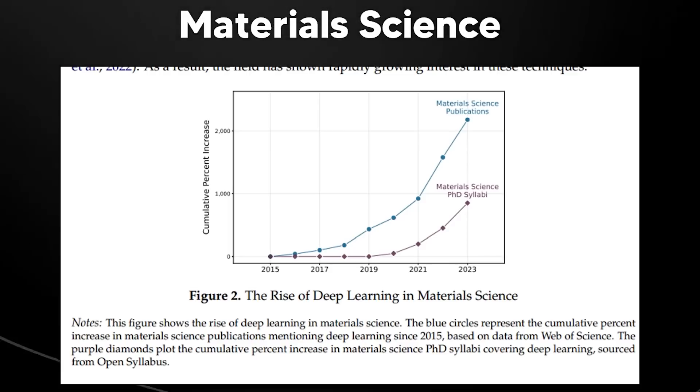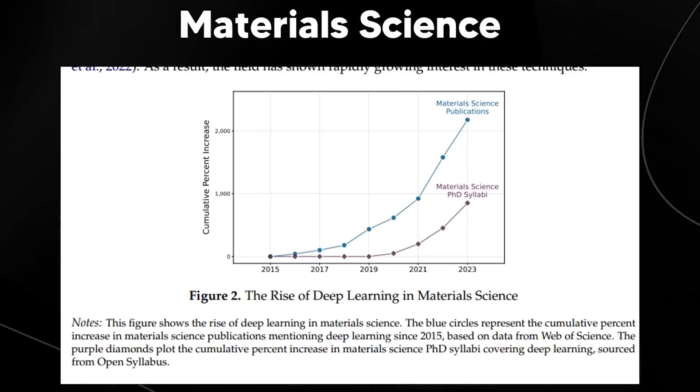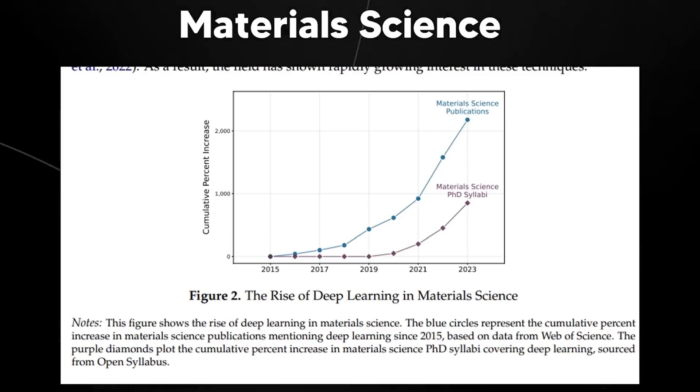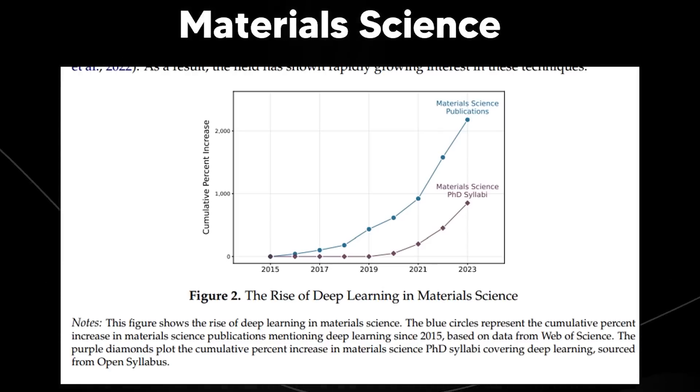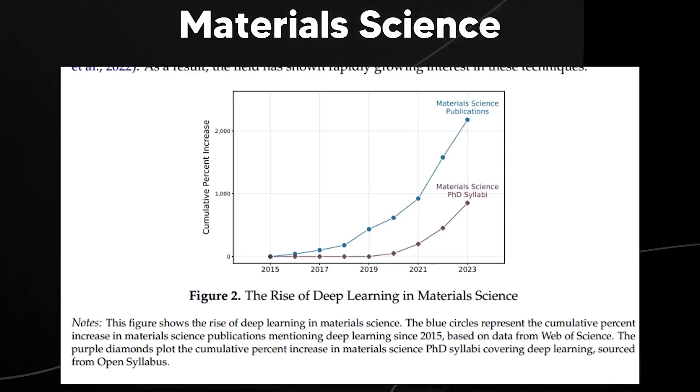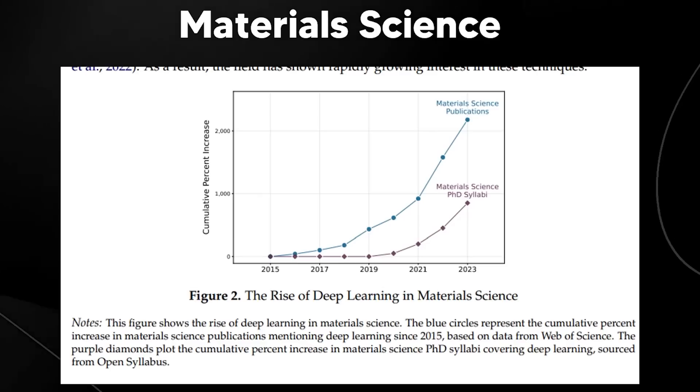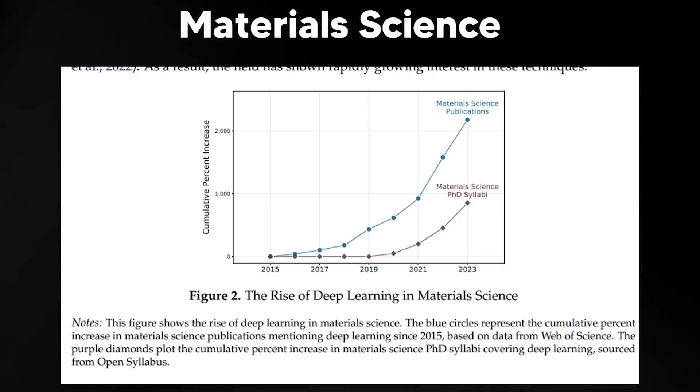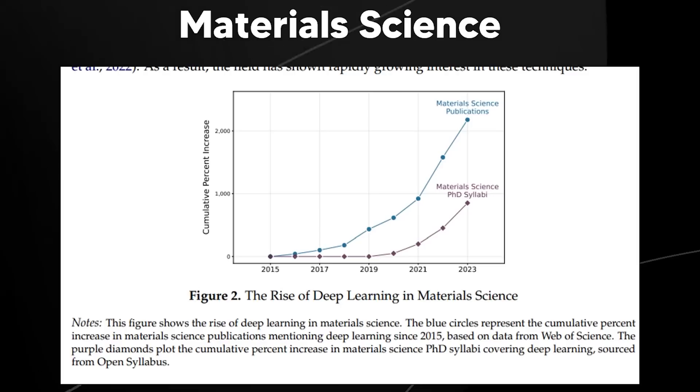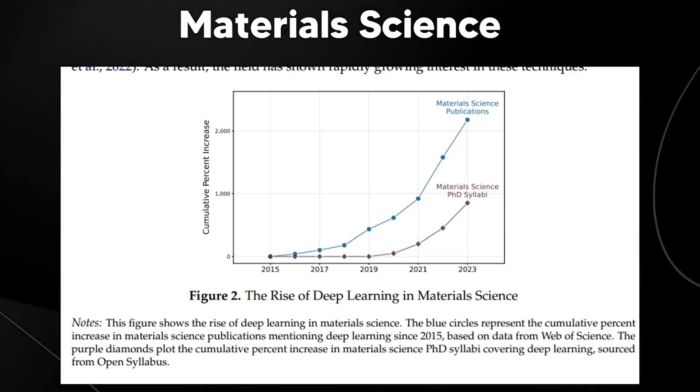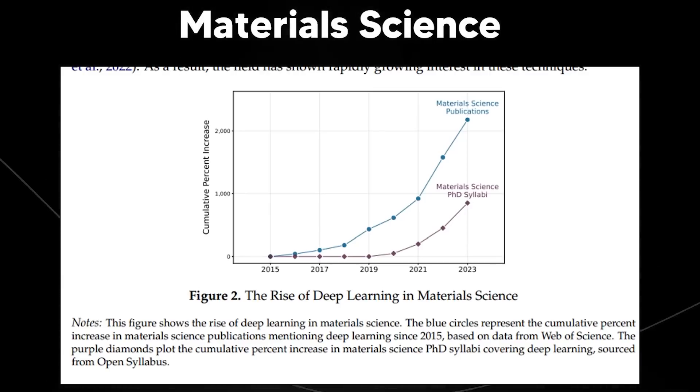This is where they show us the rise of deep learning in material science. This shows a significant advance in the use of deep learning in material science over the past decade. In the context of this paper, this graph helps illustrate how the field of material science has embraced AI technologies like deep learning since 2015. The graph has two components, the blue circles, which is the material science publications. This line represents the cumulative percentage increase in materials science publications that mentioned deep learning. Since 2015, there's been a really rapid increase, which reflects the growing influence of AI in research and innovation. We can imagine how crazy that is going to get once we start to get things like AGI that's able to accelerate this development even further.